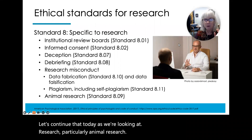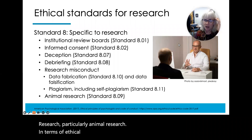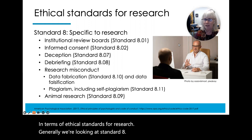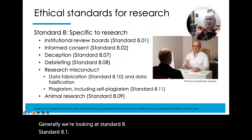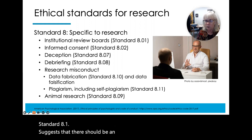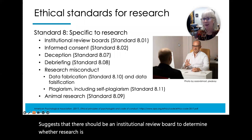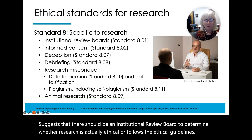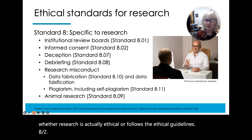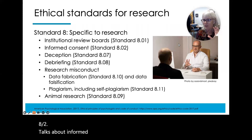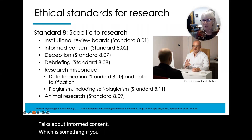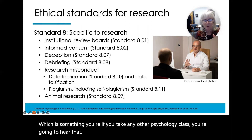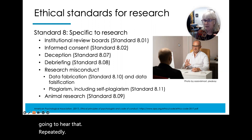In terms of ethical standards for research generally, we're looking at Standard 8. Standard 8.01 suggests that there should be an Institutional Review Board to determine whether research is actually ethical or follows the ethical guidelines. 8.02 talks about informed consent, which you're going to hear repeatedly if you take any other psychology class. 8.07 is looking at deception.